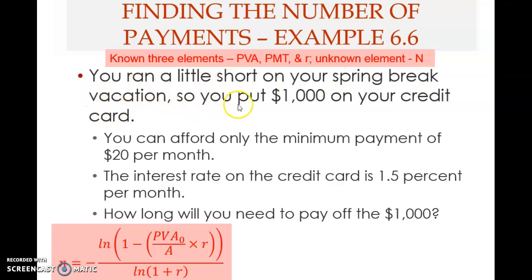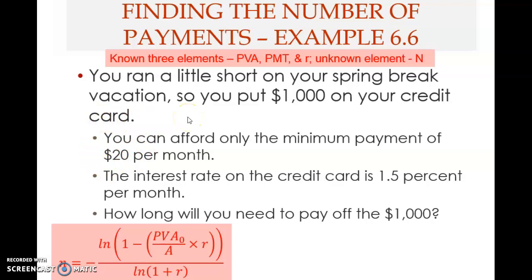Here is the example: you run a little short on your spring break vacation, so you put one thousand dollars on your credit card — meaning you borrow one thousand dollars. You can afford only the minimum payment of twenty dollars per month, which is typical of credit cards. The interest rate on the credit card is 1.5 percent per month. Note: this must be per month because the payment is also per month.